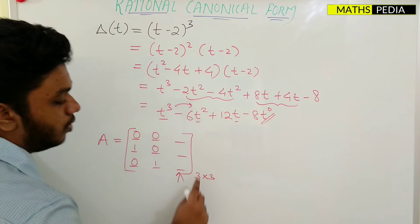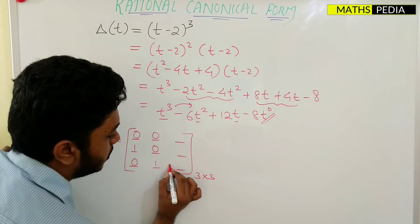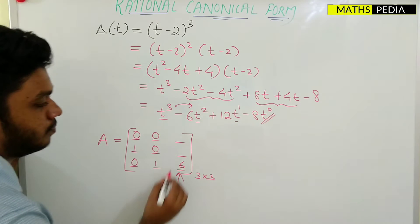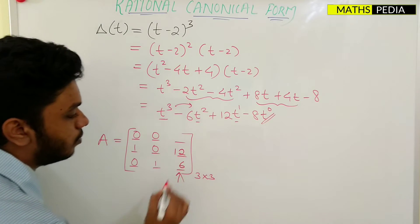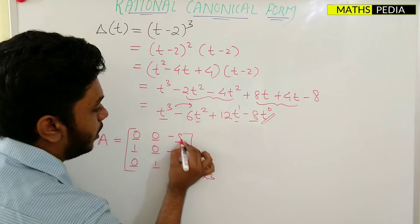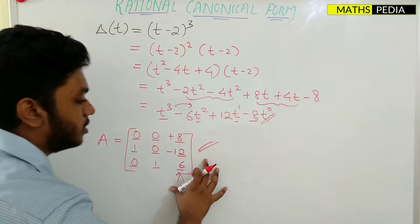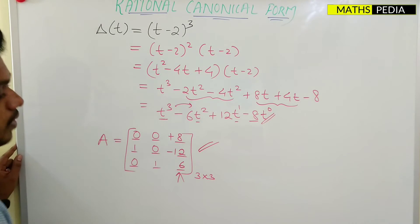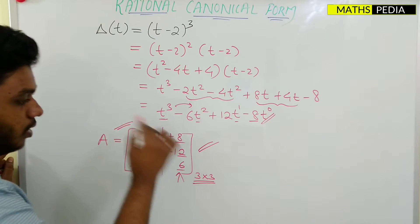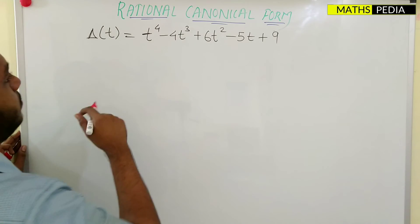From T³ we know it is a 3×3 matrix. For the last column, start from the bottom: the coefficient of T² is -6, but we change the sign to +6. Next, T power 1 has coefficient 12, change the sign to -12. Next, T power 0 has coefficient -8, change the sign to +8. This is how you write the matrix of rational canonical form for the given characteristic equation. For 3×3, the first two columns are fixed and you need to remember them; the last column depends on the characteristic equation.